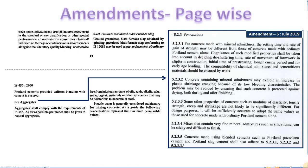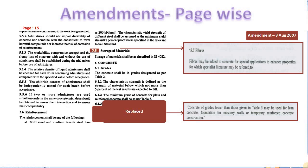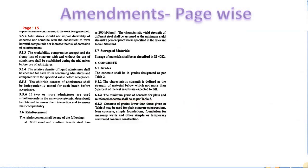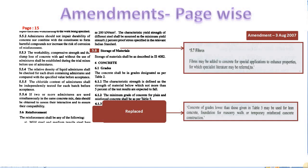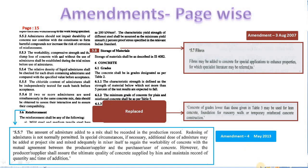This is to be done as these concretes will exhibit more plastic shrinkage cracks. In class 5.2.3.3, properties of modulus of elasticity, tensile strength, creep and shrinkage shall be used as that of OPC concrete. Now, moving to page number 15, an additional class for fibers in addition to reinforcement was added in amendment number 3. Class 6.1.3 is replaced as: concrete of grades lower than those given in table 5 may be used for lean concrete, foundation for masonry walls, or temporary reinforced construction. The word 'simple foundation' was removed in amendment 3. In amendment 4, a new class 5.5.7 was added to maintain record of quantity and time of addition of admixture.